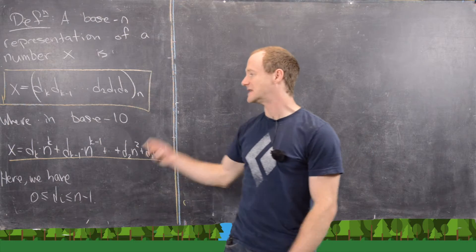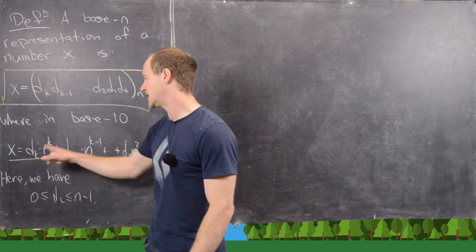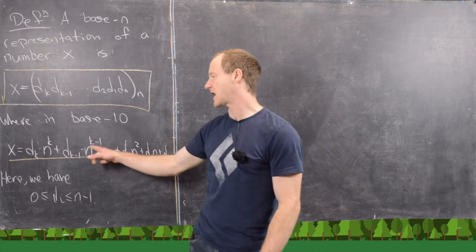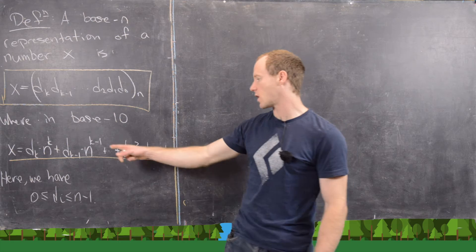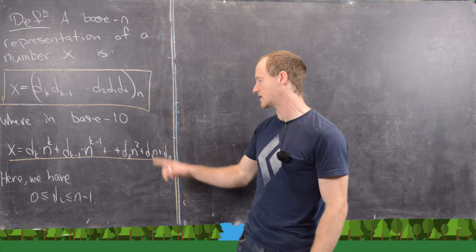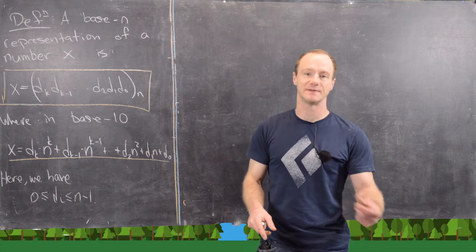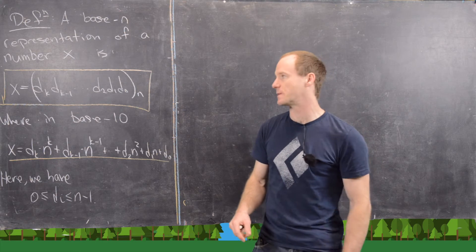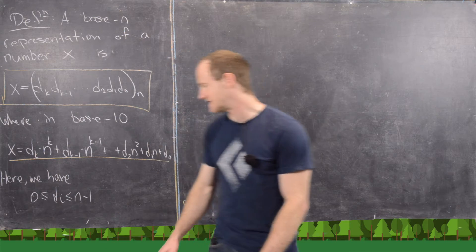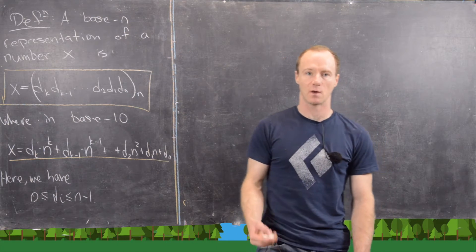In base 10, x can be represented as d_k times n to the k, plus d_{k-1} times n to the k minus 1, all the way down to d_2 times n squared, d_1 times n to the first power, and d_0 times n to the zero power — but n to the zero power is just 1. Furthermore, these digits, these d_i's, are between 0 and n minus 1.